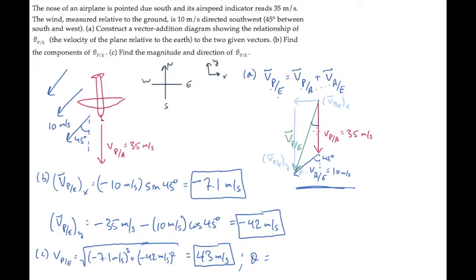That's shown here. It equals the inverse tangent of the ratio of the opposite to the adjacent lengths. That's calculated here and equals 9.6 degrees west of south.